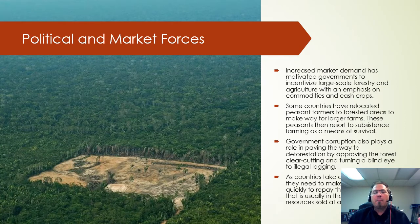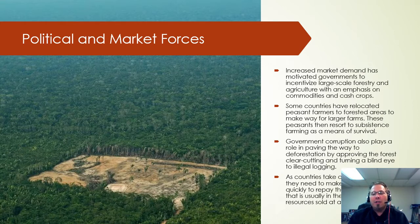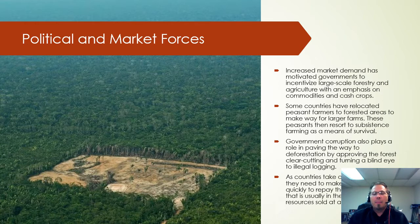There are also political and market forces at play. Looking at the Amazon rainforest image, you can see an area completely devoid of trees — probably thousands and thousands of trees removed, meaning less CO2 being absorbed, less biodiversity, and more erosion. Increased market demand has motivated governments to incentivize things like cash crops or cattle farms. Everybody makes money: the farmer from cattle, the country from taxes, and McDonald's from the beef supplied by these farmers.